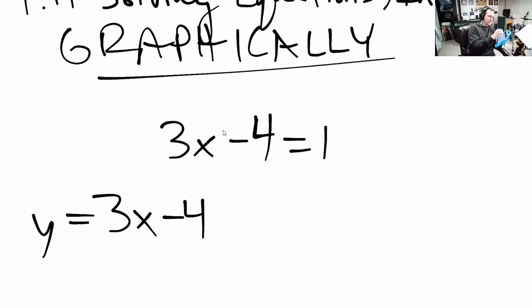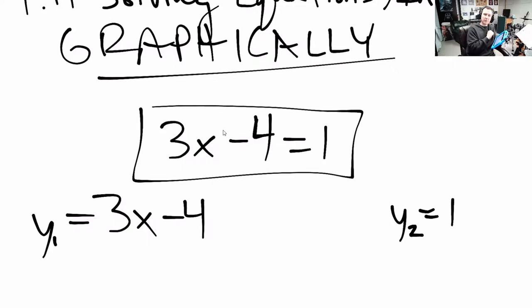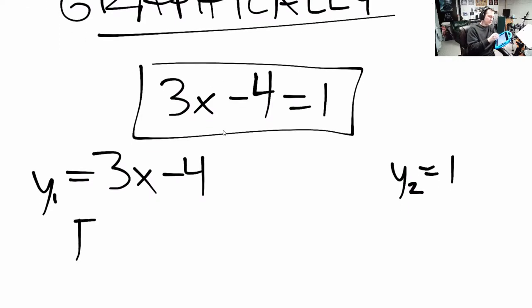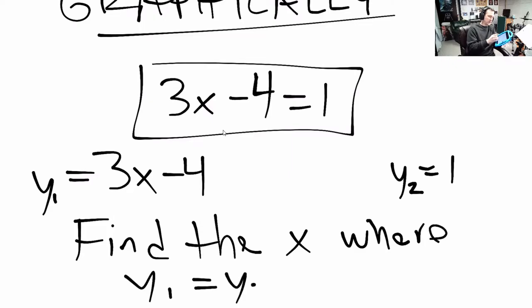I'm going to take the right side and say, well, that's another one. So maybe this is y₁ and this is y₂, different functions here, different equations. What this statement is asking you to do is to find the x which makes both these equations true. So find the x where y₁ equals y₂.